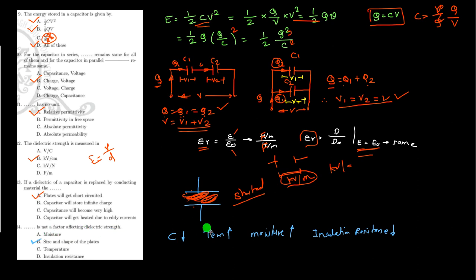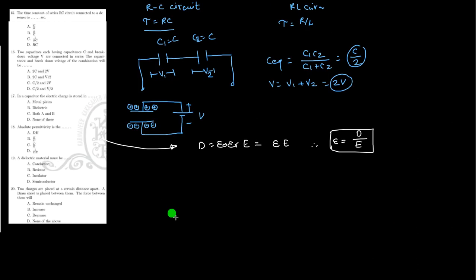Which is not a factor affecting the dielectric? Capacitance decreases with increasing temperature, increasing moisture, and decreasing insulation resistance — but it does not depend on the size and shape of the capacitor. So size and shape is the correct option. Also: the time constant in an RC circuit is R·C, and the time constant in an RL circuit is L/R.